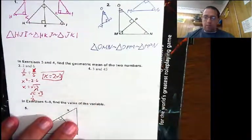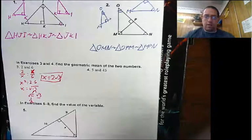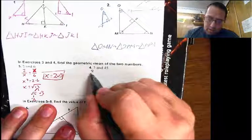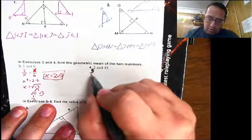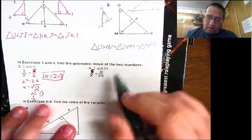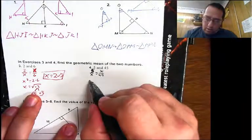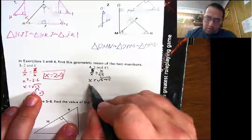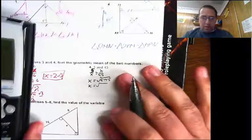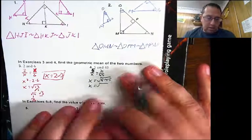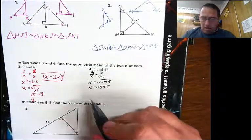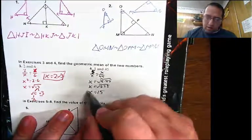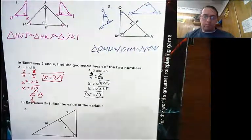Pause the video and work out number 4. For number 4: 5 over X equals X over 45. This gives me X equals the square root of 5 times 45. 5 times 45 is 225. And the square root of 225 is 15. So X equals 15.